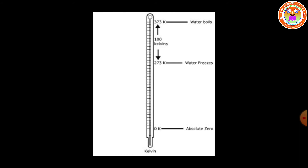Next one is Kelvin scale. The picture shows the Kelvin scale. Kelvin scale is termed after Lord Kelvin. It is the SI unit of measuring temperature, written as K. It is also known as the absolute scale as it starts from absolute zero temperature, which is zero Kelvin. Kelvin scale is used in the laboratory.